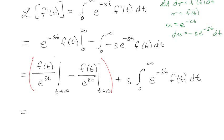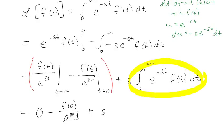What's great about the first part is as long as that limit exists, we divide by a super huge number, which basically leaves it at 0. Then on the top, we have f evaluated at 0, which is an initial condition, over e to the 0, which is just 1. And then over here, we have s, and this integral is just the definition of a Laplace transform, so s times F(s).